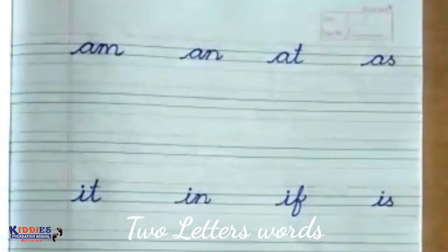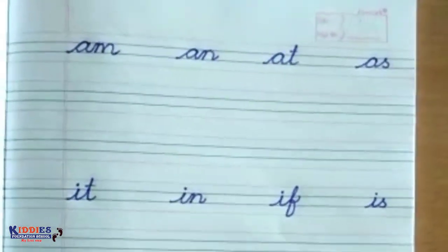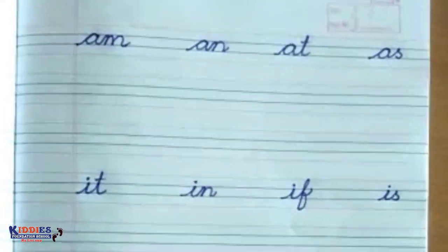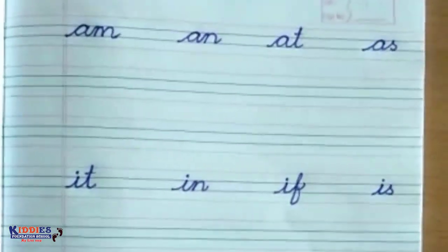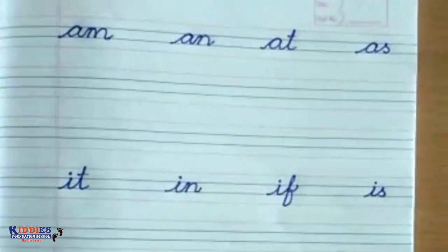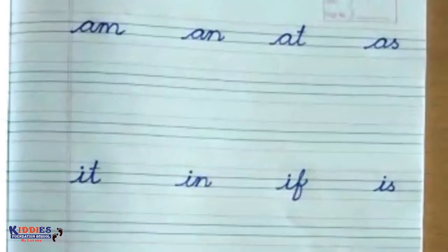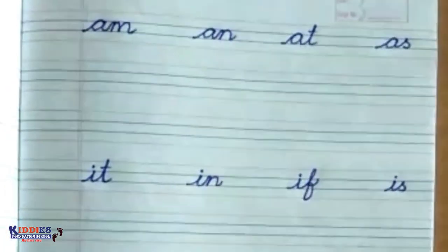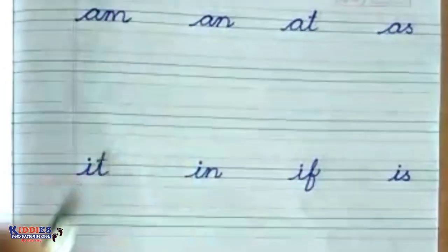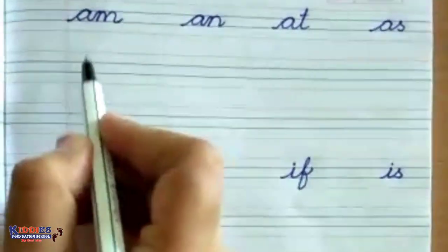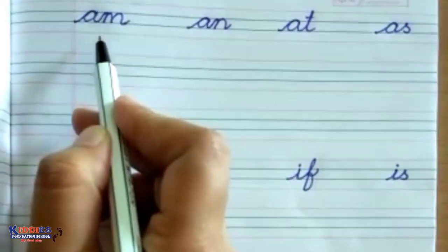Hello friends, today we are going to learn how to write two-letter words in cursive. So let's start. These are the words in two letters in cursive. Let's start with the first one, that is 'am'.